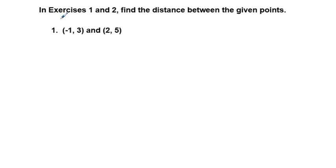I'm going to do all the odd number problems, but I'll also take a quick look at number 2 because it has an element that can throw students off. Here's exercise 1 and 2: find the distance between the given points. We have negative 1 comma 3, and 2 comma 5. For this, there's a distance formula — we used this formula when we were working with vectors.